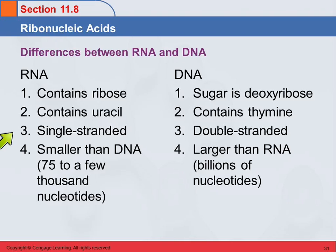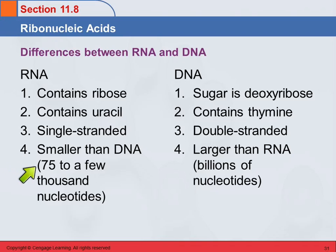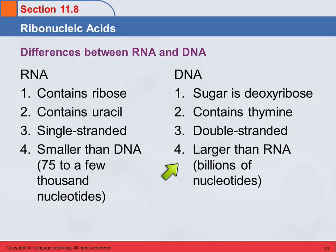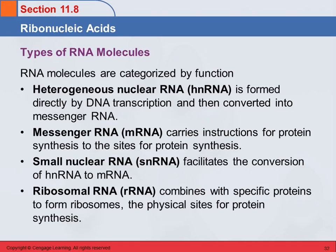RNA is single-stranded. DNA is double-stranded. RNA is smaller than DNA — it can range from 75 to a few thousand nucleotides. DNA is much, much bigger; we're talking billions of nucleotides. So DNA is definitely much larger, and you should be familiar with these differences between DNA and RNA.